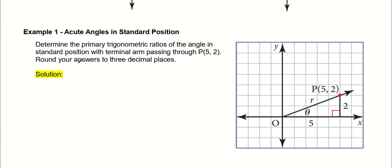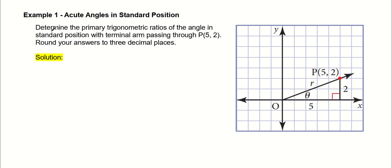The best way to understand these problems is to do examples. So let us read the first example. It says here, determine the primary trigonometric ratios of an angle in a standard position with a terminal arm passing through a point, and here's the point here, it's 5 and 2. The x is 5 and the y is 2. It asks you to round your answer to the nearest three decimal places.